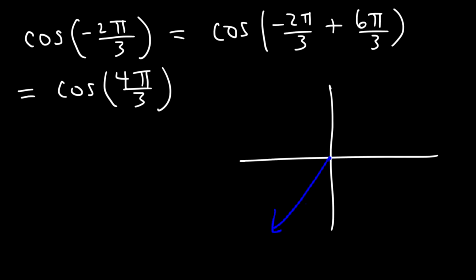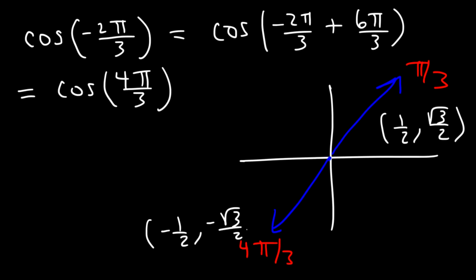So here's 4 pi over 3 and here's pi over 3. Pi over 3 is the reference angle of 4 pi over 3. It's also the reference angle of negative 2 pi over 3. So at pi over 3 or 60, we have the point 1 half, root 3 over 2. Now at 4 pi over 3, the x and the y values are negative. Cosine is equal to the x value. So cosine 4 pi over 3 is negative 1 half, which is equal to cosine of negative 2 pi over 3.